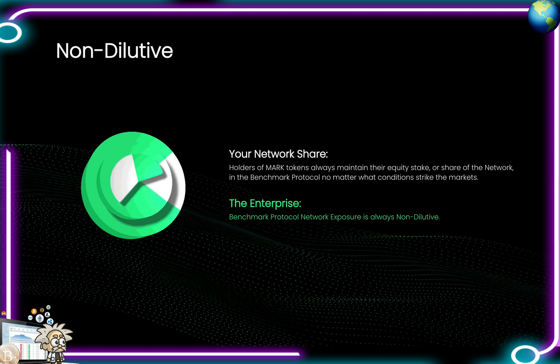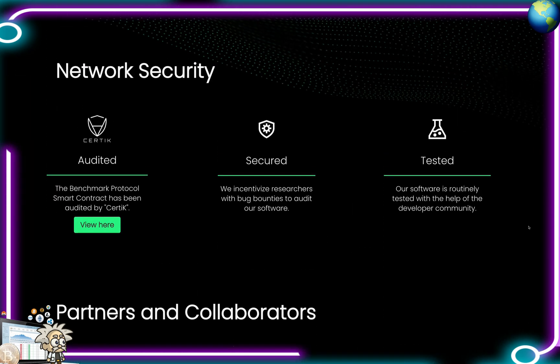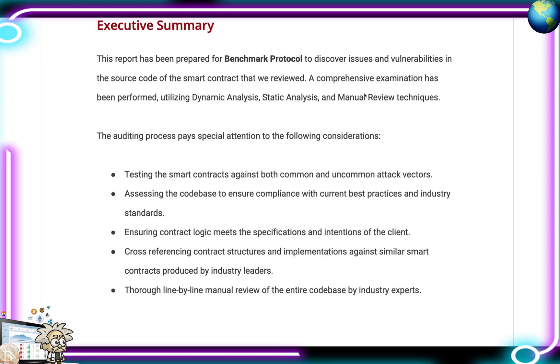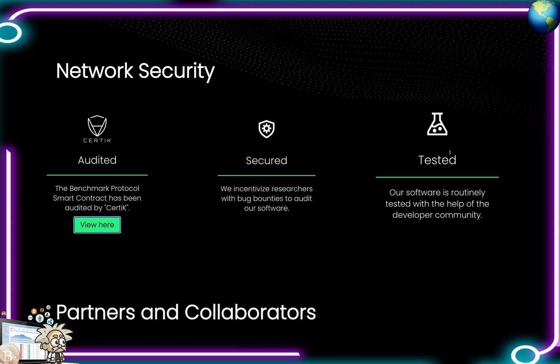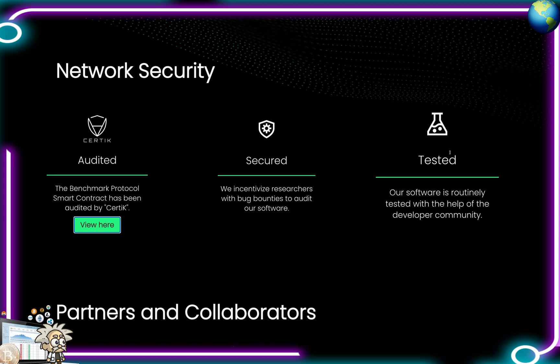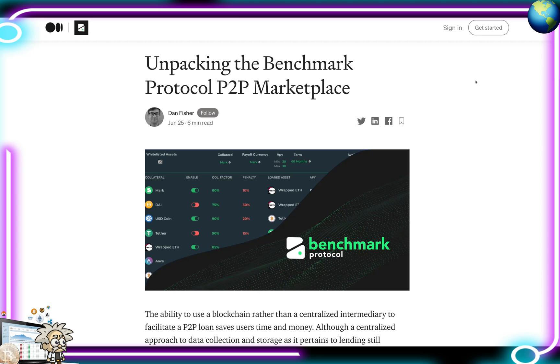The enterprise Benchmark Protocol network exposure is always non-dilutive. As for network security, they've been Surtech audited. The Benchmark Protocol smart contract has been audited by Surtech, and their full audit is available on GitHub — about 13 pages long, covering the executive summary, testing summary, review notes, and findings. They are secured and have incentivized researchers with bug bounties to audit their software. Their software is routinely tested with the help of developer communities. Some of their partners and collaborators include Novo, Surtech, DigiFox, Finance, bZx Fulcrum.